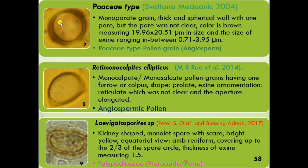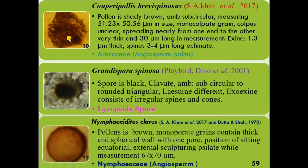This monoporate pollen grain belongs to angiosperm. This kidney-shaped spore belongs to ferns and is a monolete spore with one scar. This specimen belongs to the Araceae family — pollen is shady brown and subcircular. This dark spore is circular to round-triangular and the exine consists of irregular spines and cones. This spore belongs to the Lycopsida.